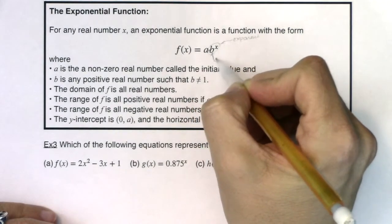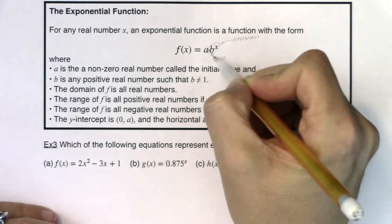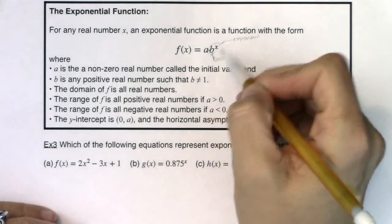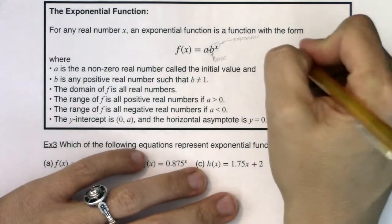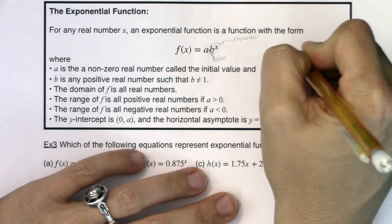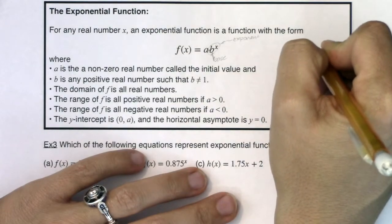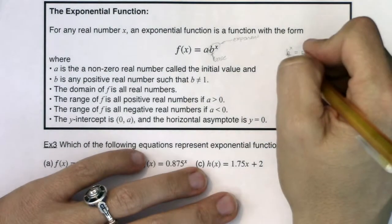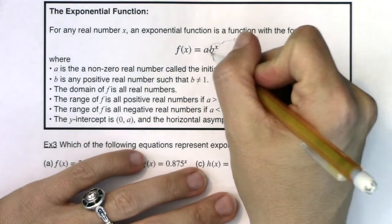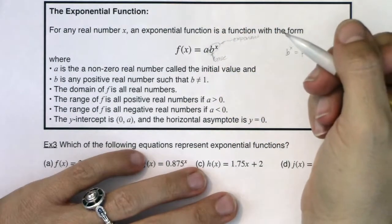b here is the base, and collectively together they're called a power. So if I write b to the x, we could say that is a power, b raised to a certain power. But technically we would say b is the base and x is the exponent.